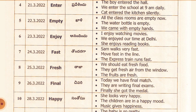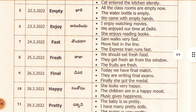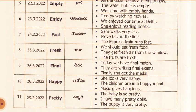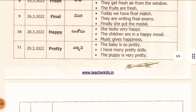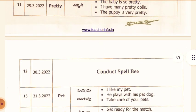28th March: Happy. Telugu meaning: Santosham. She looks very happy. The children are in a happy mood. Music gives happiness. 29th March: Pretty. Telugu meaning: Chakkani. The baby is so pretty. I have many pretty dolls. The puppy is very pretty.